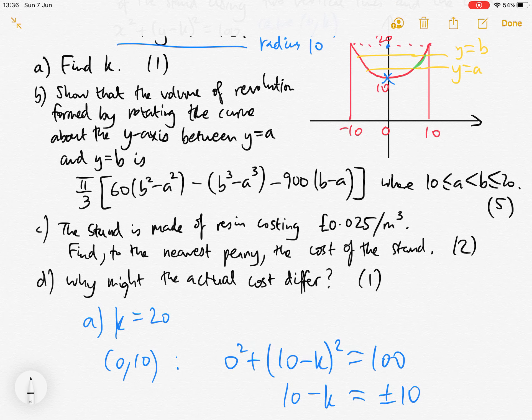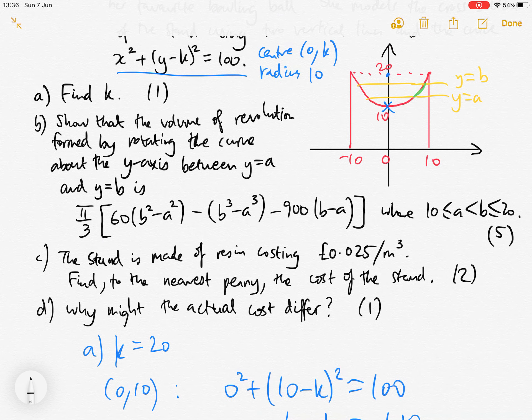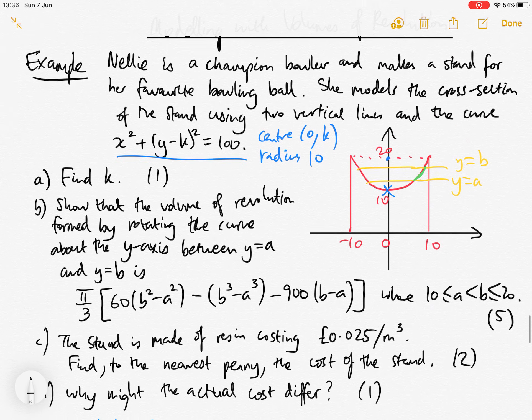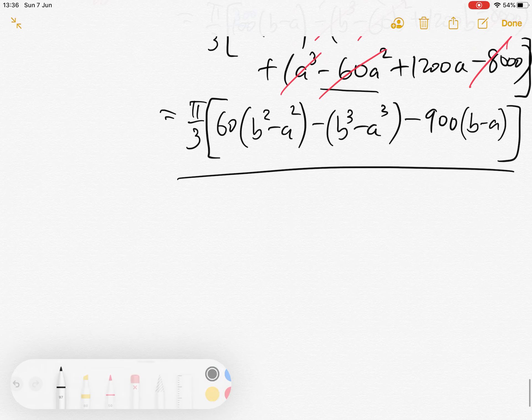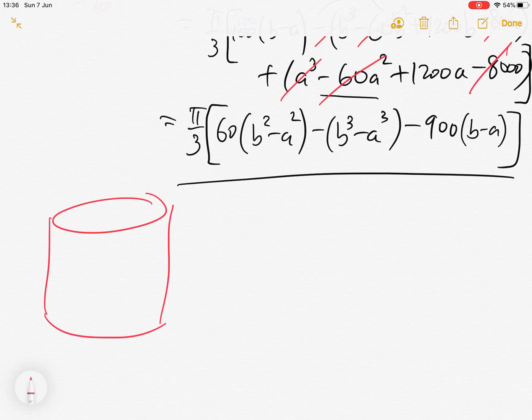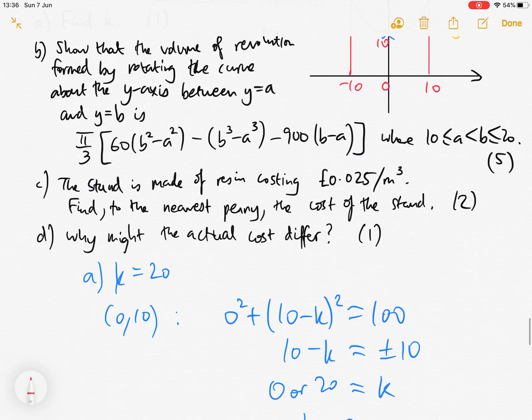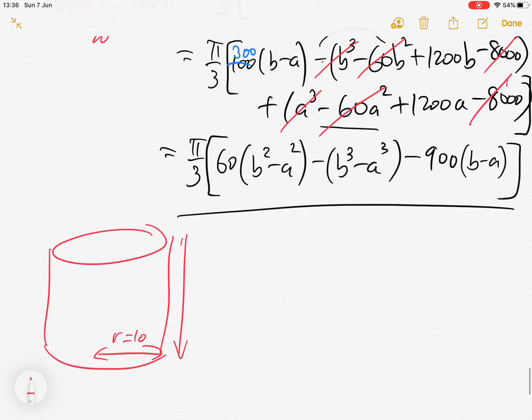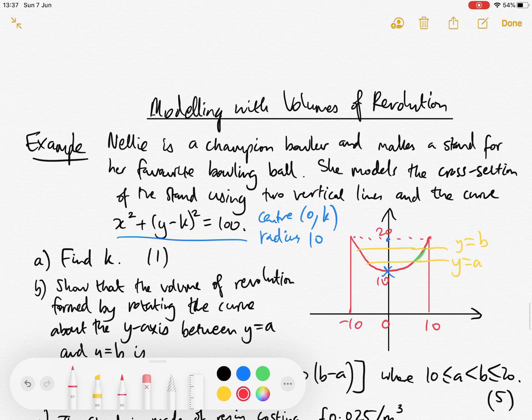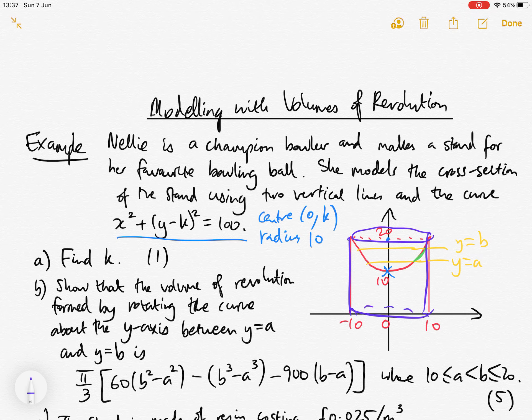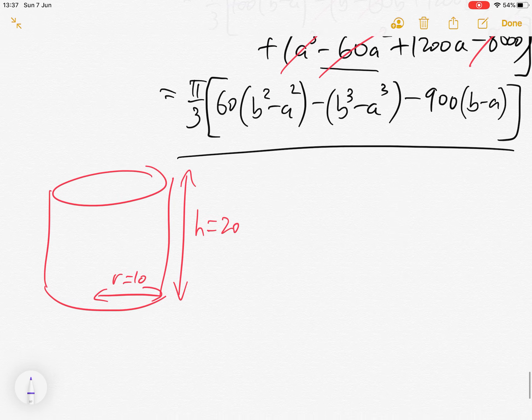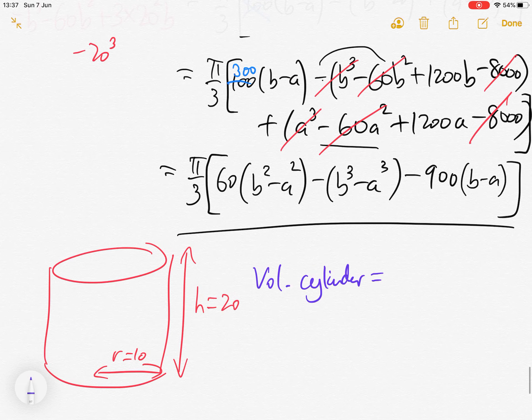Part C: The stand is made of resin costing 2.5 pence per meter cubed. Find to the nearest penny the cost of the stand. Notice that the cylinder between minus 10 and 10 for x, this cylinder of radius 10 and height 20, we can work out the volume of this and then take away what we get if we rotate the curve between y equals 10 and y equals 20. So the volume of the cylinder is pi times 10 squared times 20, which is 2000 pi.